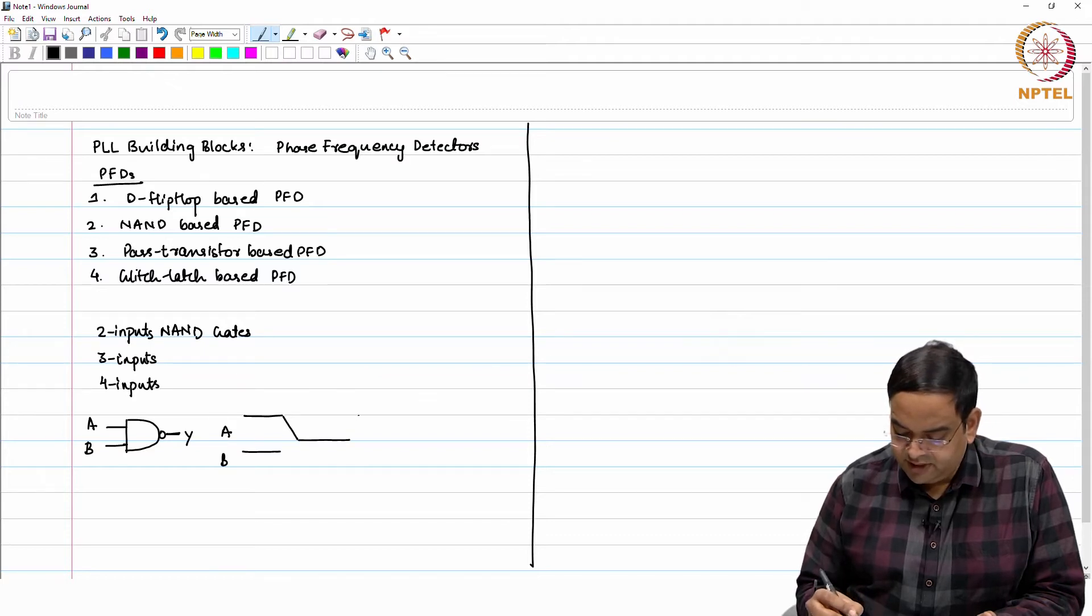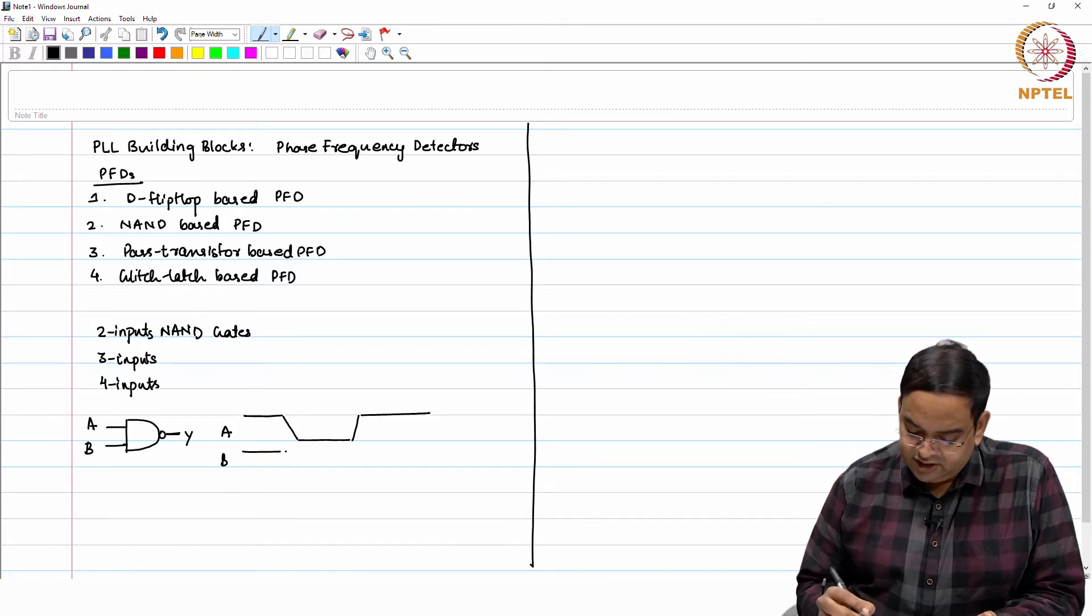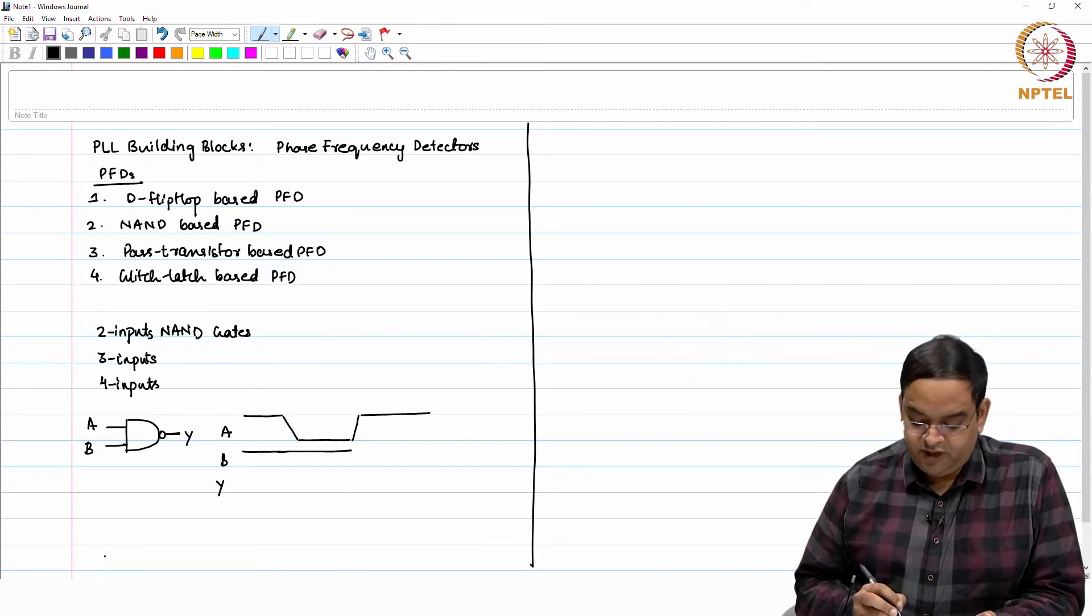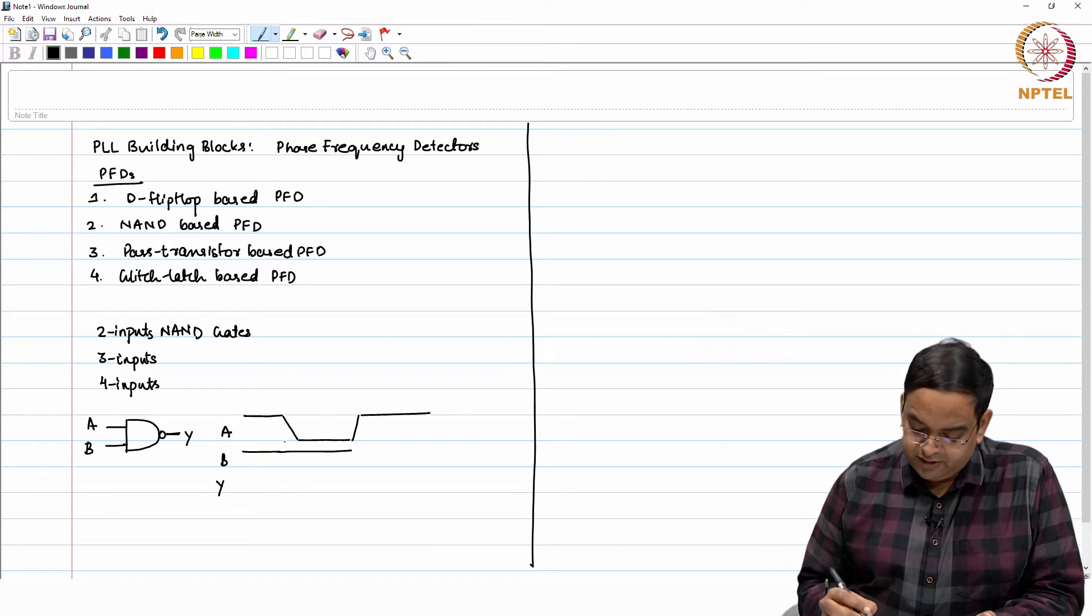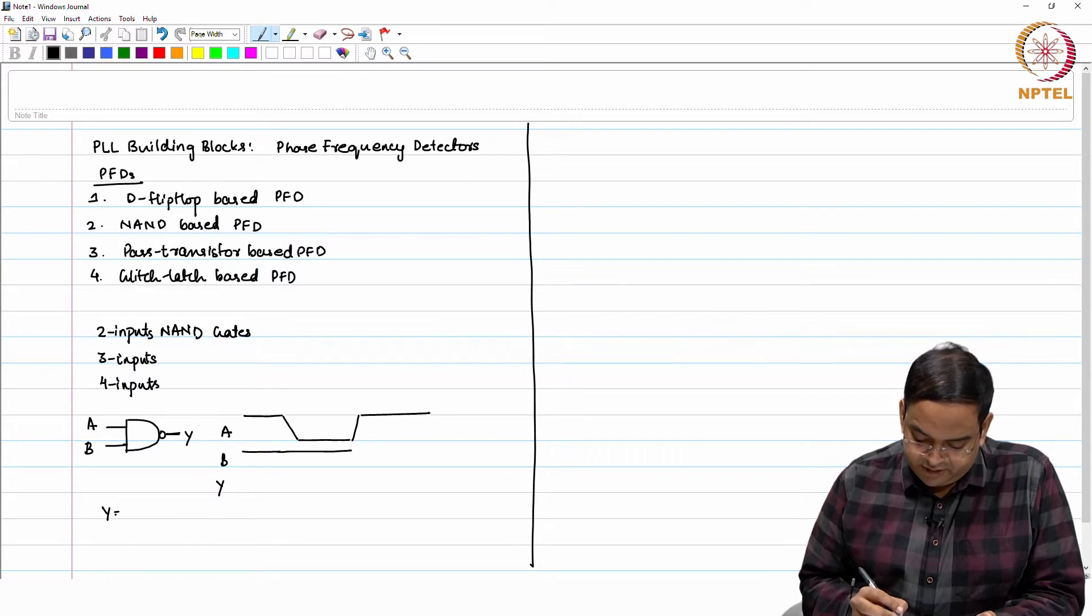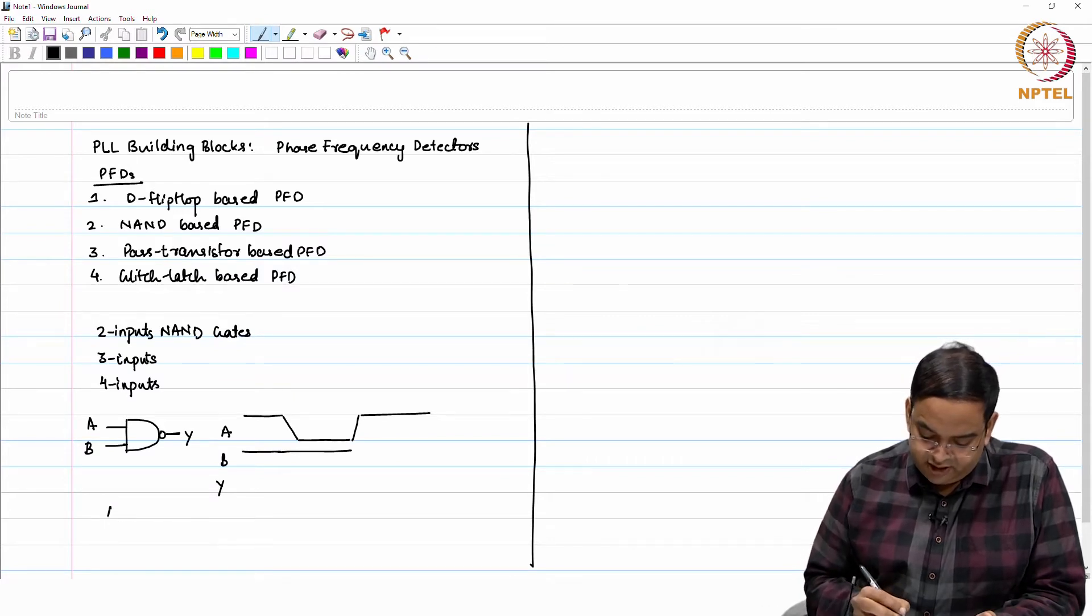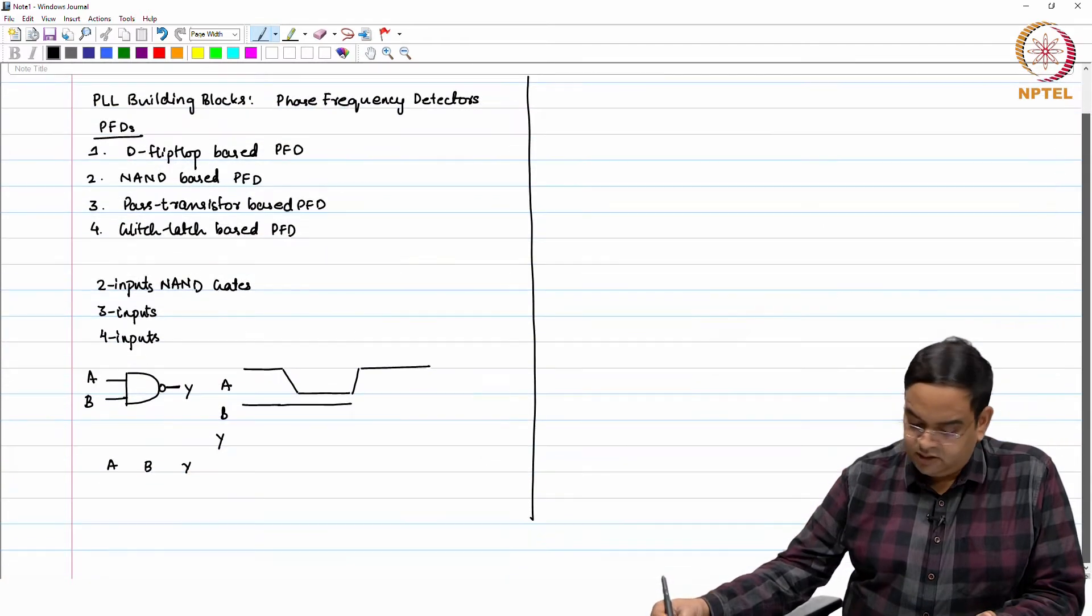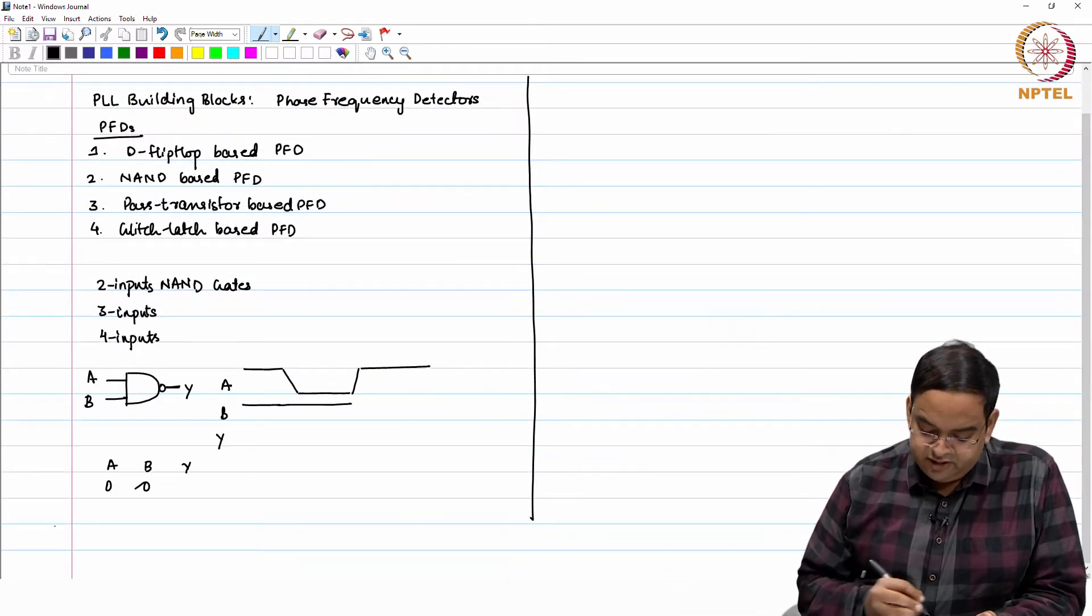If A makes a transition and B remains high, your Y output - A NAND B - will be equal to 1, because the operation is: if you look at the truth table A, B and Y.